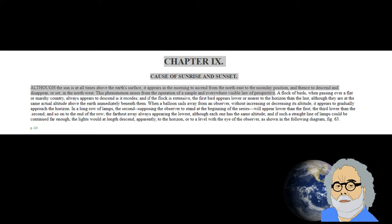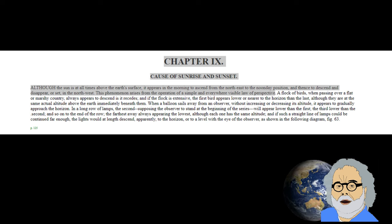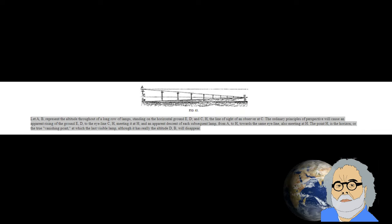They just keep parroting what Samuel Robotham has written in his book Synthetic Astronomy in 1881: Although the sun is at all times above the earth's surface, it appears in the morning to ascend from the northeast to the noonday position and thence to descend and disappear or set in the northwest. This phenomenon arises from the operation of a simple and everywhere visible law of perspective. How is this perspective thing supposed to work on a flat earth?